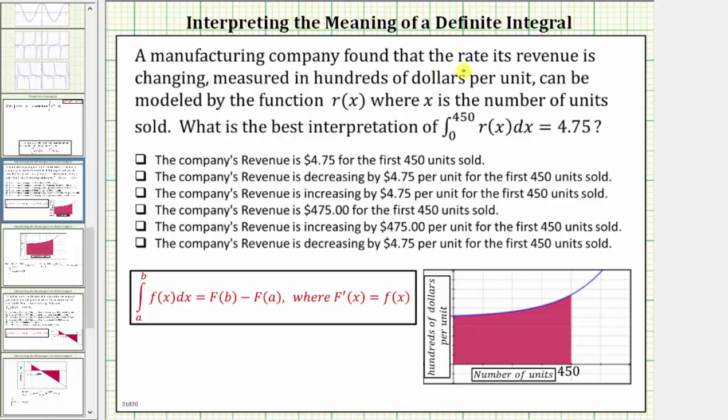A manufacturing company found that the rate its revenue is changing, measured in hundreds of dollars per unit, can be modeled by the function r(x), where x is the number of units sold. What is the best interpretation of the integral from 0 to 450 of r(x)dx equals 4.75?